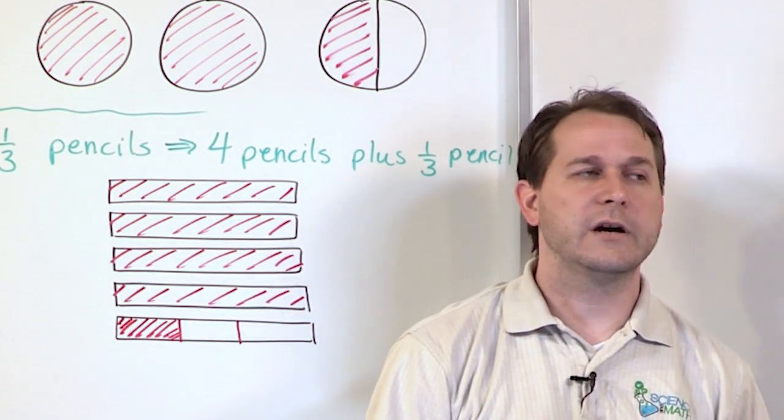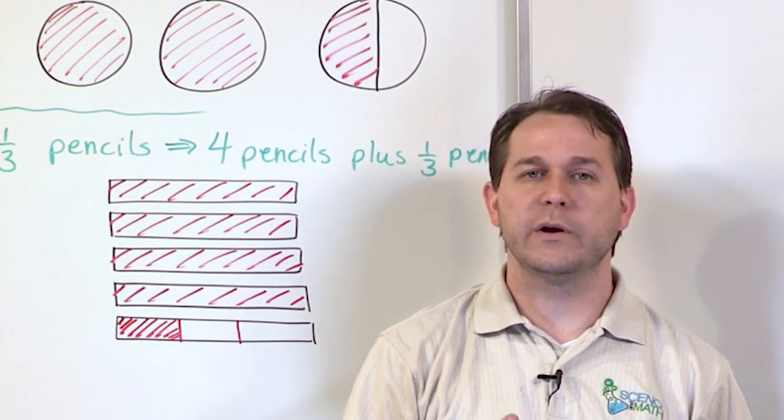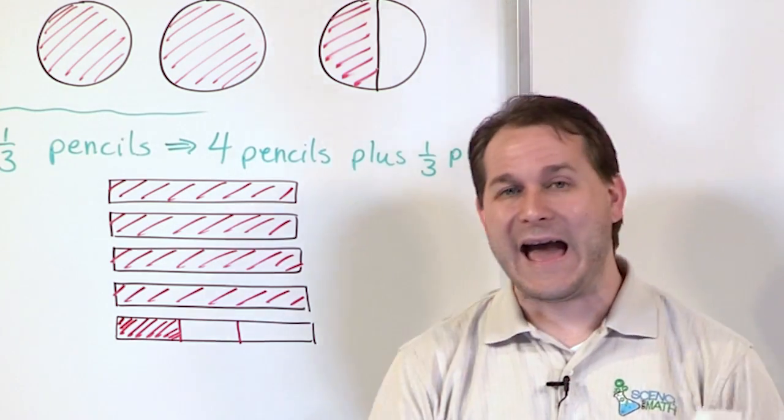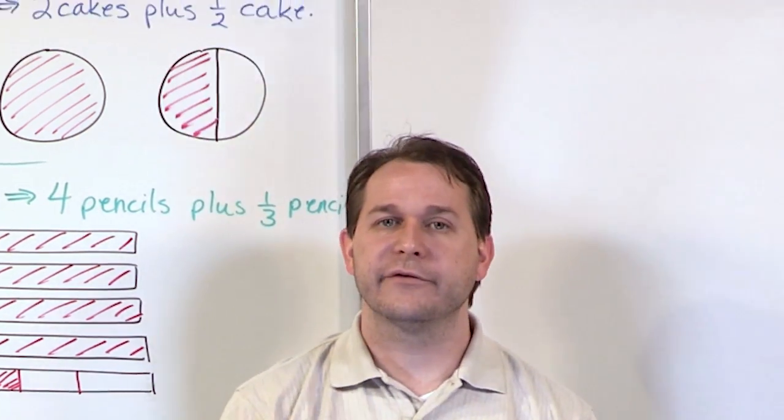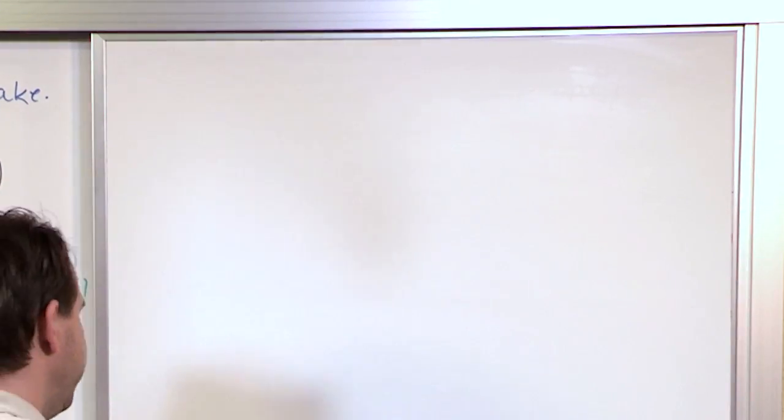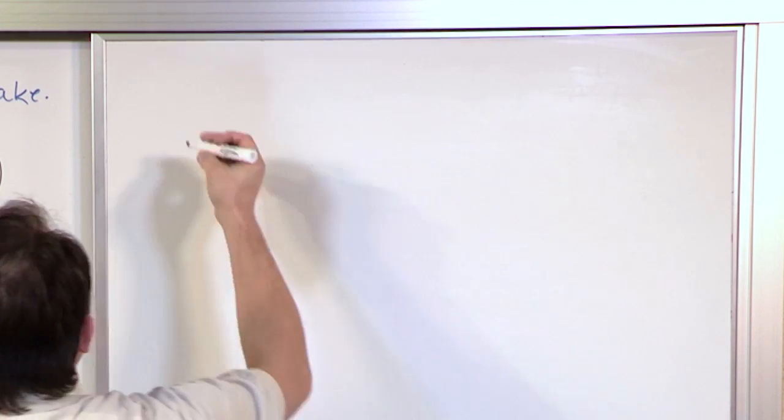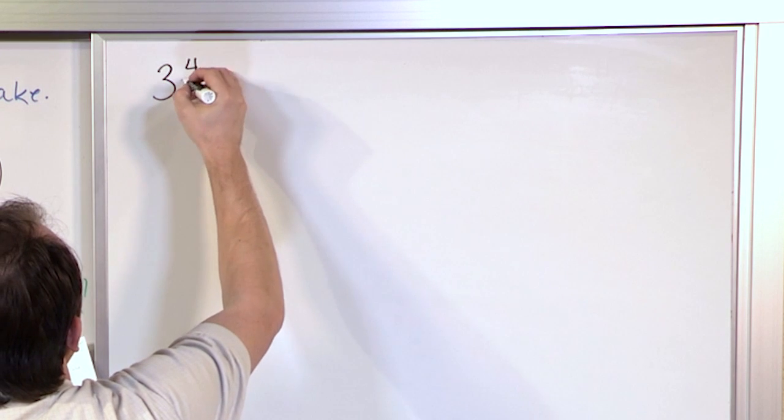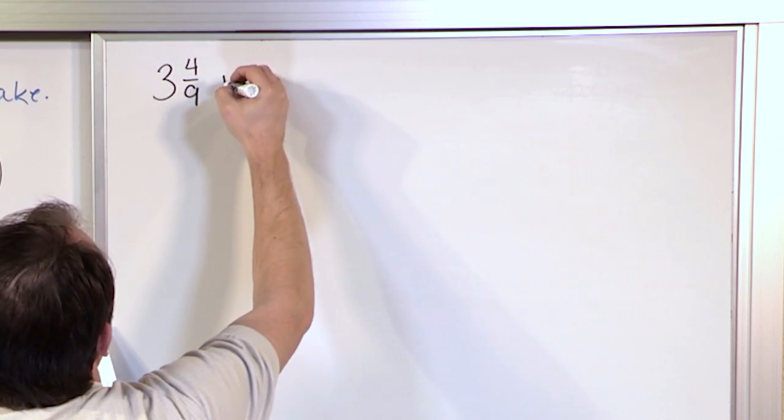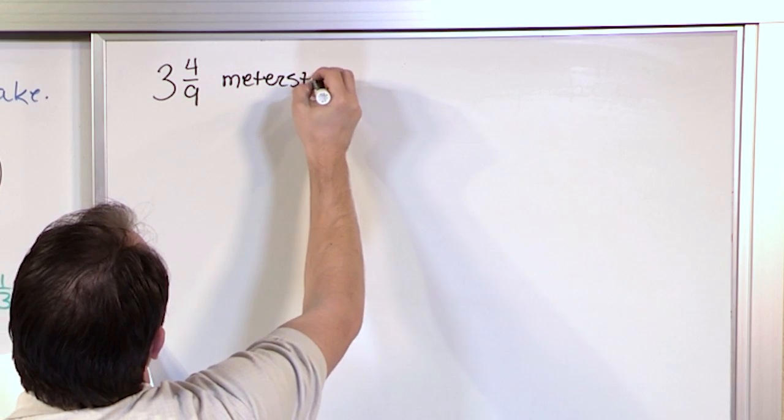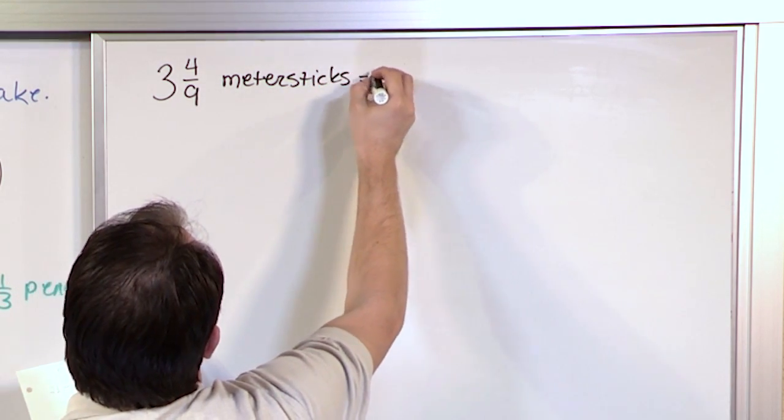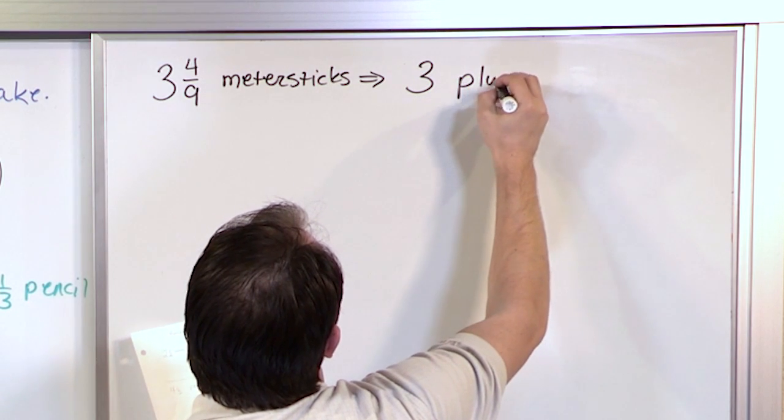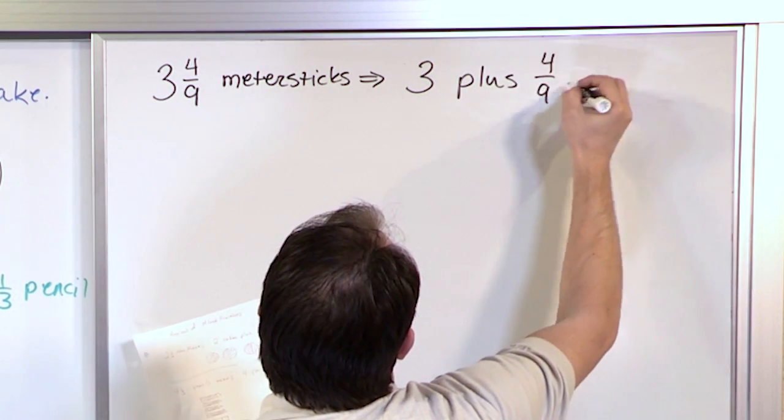Mixed numbers are commonly seen all over the place and we're going to need to be comfortable with mixed fractions because we are going to, in a little while, add and subtract and multiply them together. So you need to be comfortable with how to do that. So if I have three and four ninths meter sticks, for example, then what it means is I have three plus four ninths more.